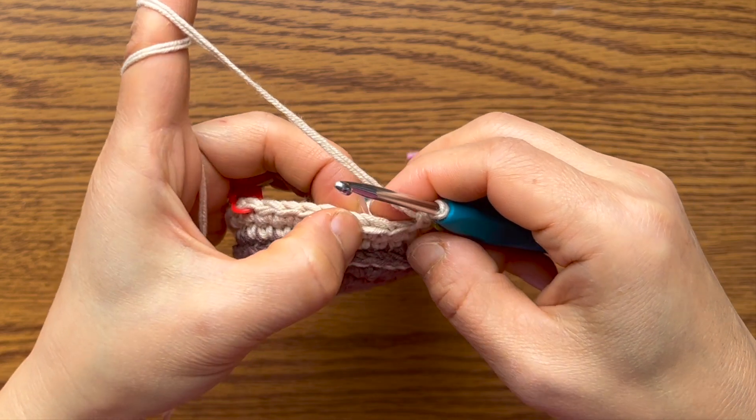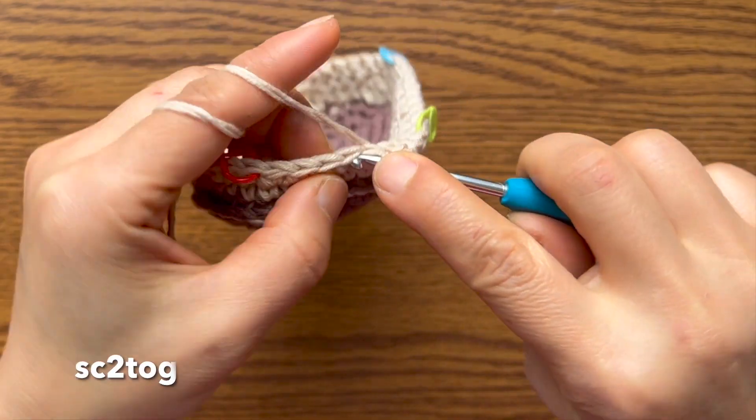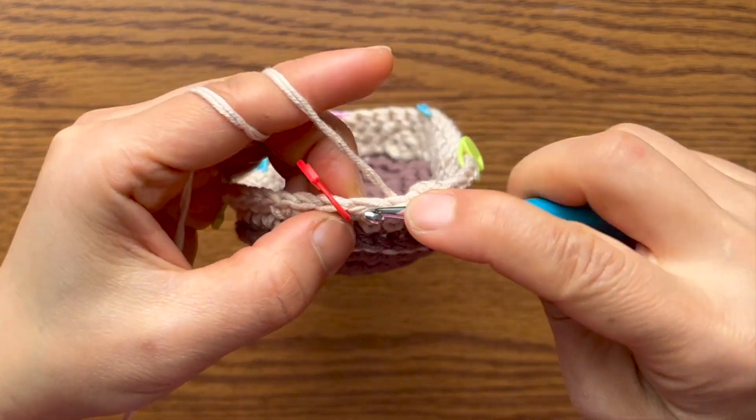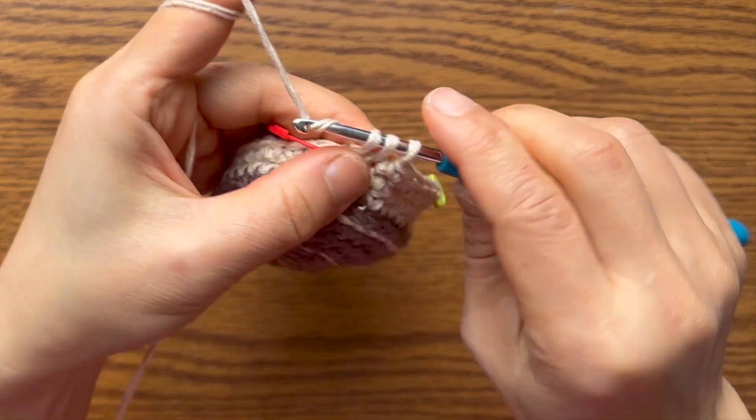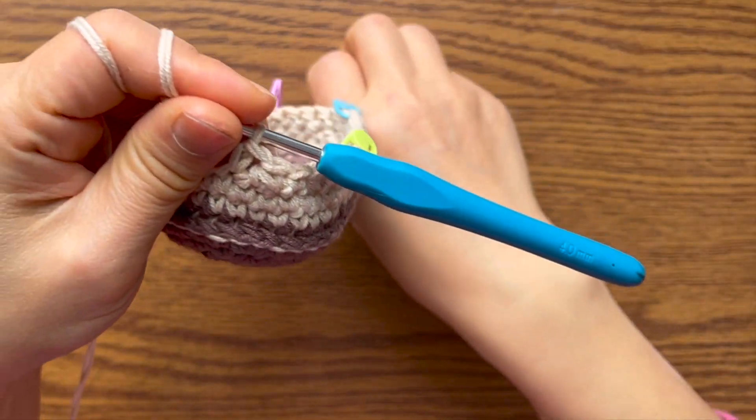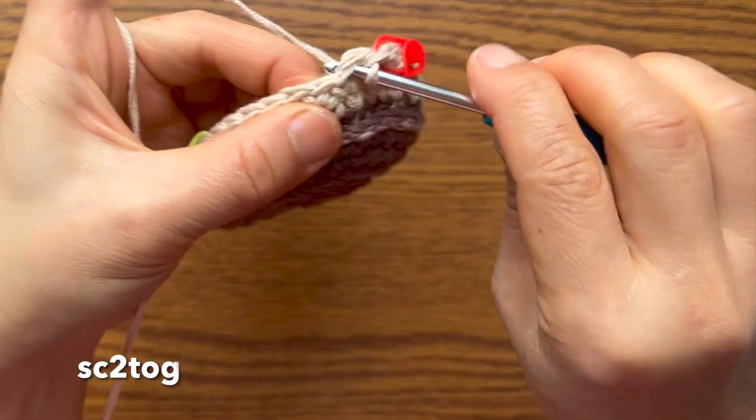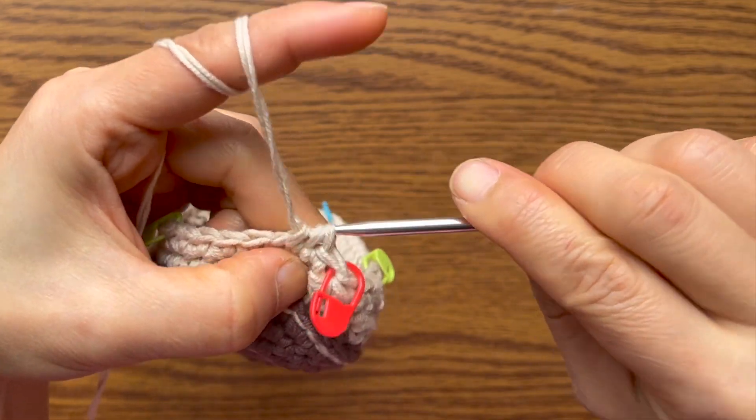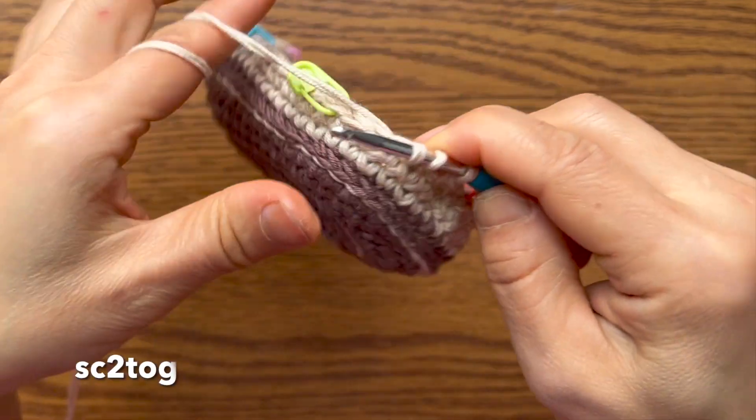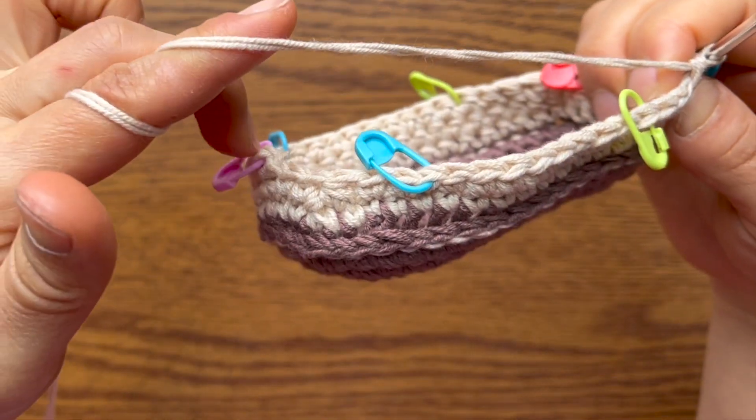We always decrease 2 stitches on each side of the middle point indicated by the red marker. So decrease, single crochet, decrease, single crochet. Always single crochet in other stitches. If middle point falls on a stitch, use single crochet on this stitch. Now decrease the same way on the other side of the red marker. Decrease one, single crochet, decrease again. Single crochet till the end of this round.